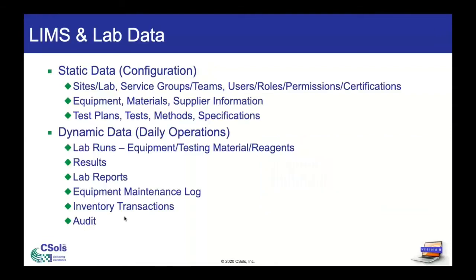First talking point: LIMS and lab data. Within your LIMS systems, and within STARLIMS specifically, STARLIMS divides data into two separate types — static and dynamic. In terms of static data, you can think of it as your configuration data. Within your lab, you have your lab location, your service teams and groups, your users, your equipment, your materials, your suppliers, your test plans, your test methods, and specifications. These exist both in the real world as well as within LIMS configuration. Static data represents the modeling of your lab and how that real-world lab exists within the LIMS system — it's the data that you set up initially.